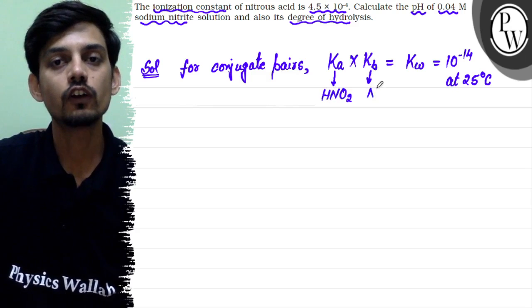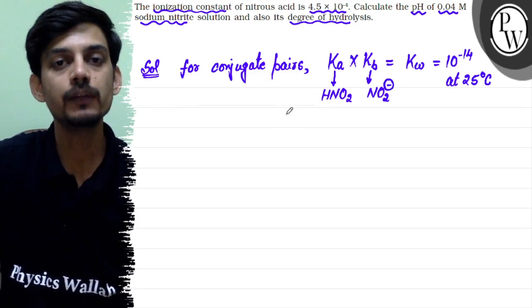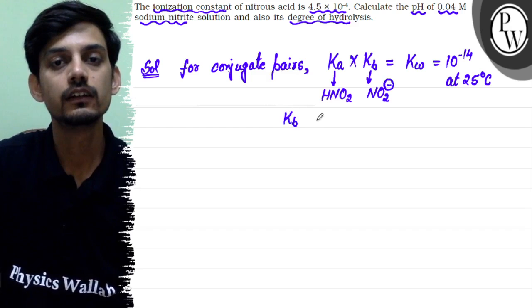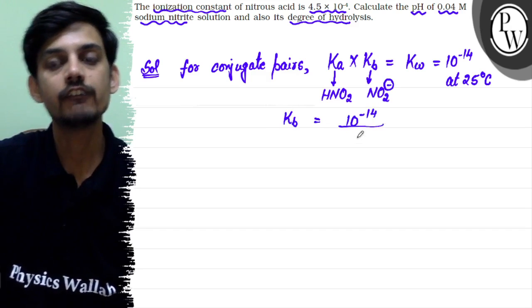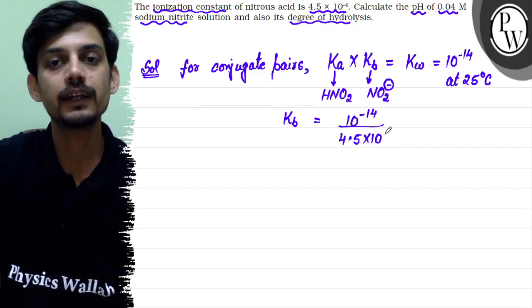So Kb will be for conjugate base of nitrous acid that is NO2-. So from here we can calculate the Kb is equal to 10^-14 divided by 4.5 × 10^-4. This is equation 1.